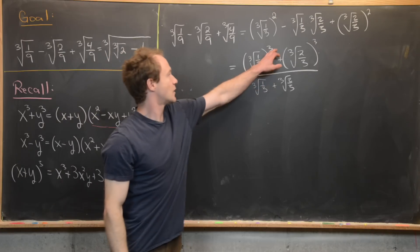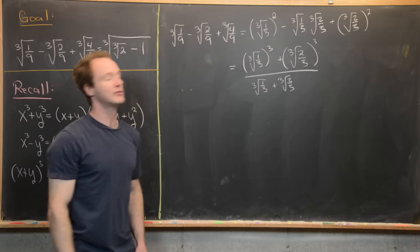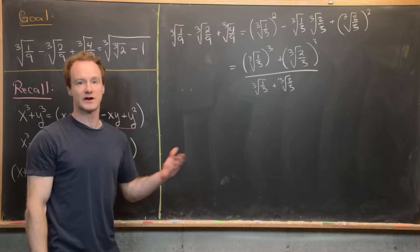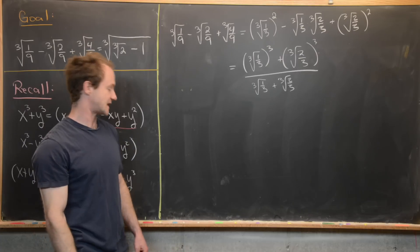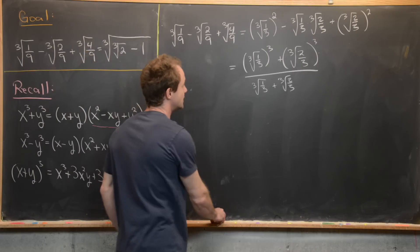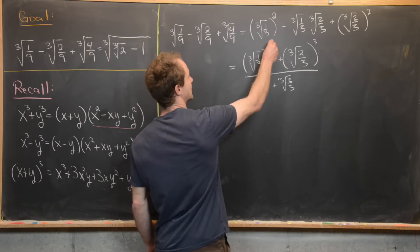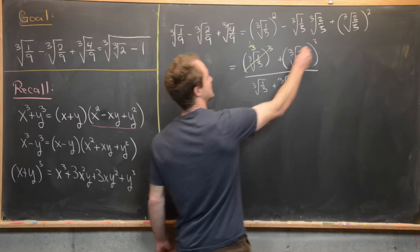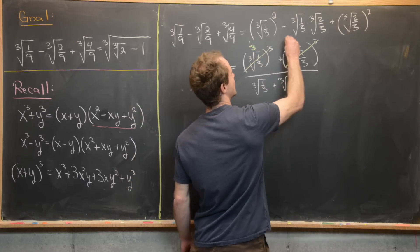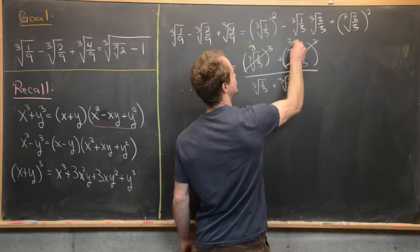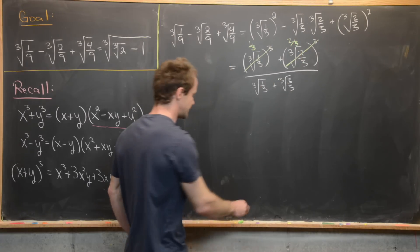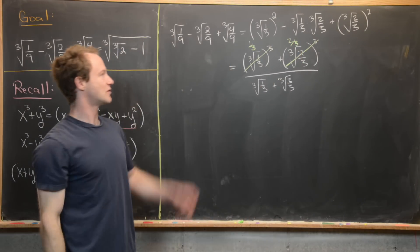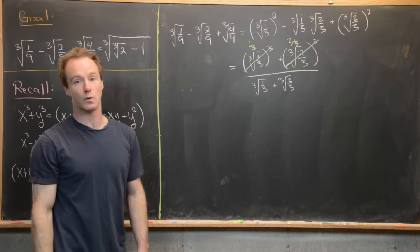Since we're cubing cube roots in the numerator, that works out nicely. The cube root of 1/3 cubed is just 1/3, and the cube root of 2/3 cubed is just 2/3, so the numerator adds up to 1.